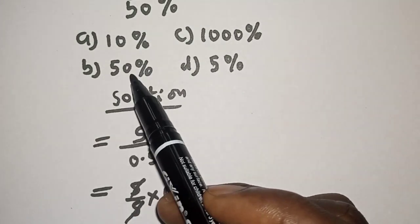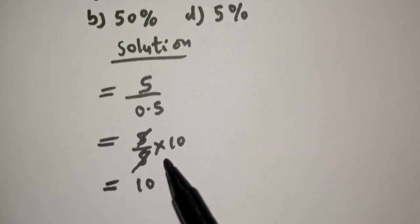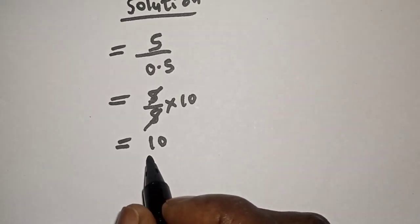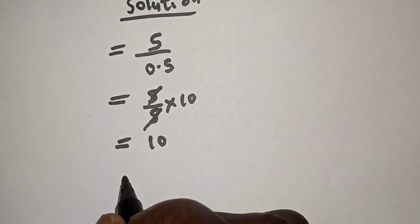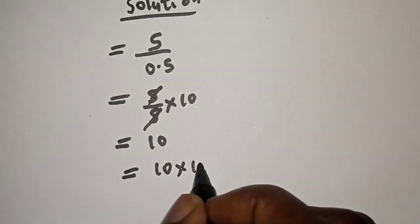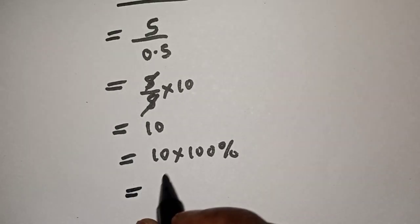We have 10%, 50%, 1,000%, and 5%. We have to convert this to percentage. In order to convert this to percentage, this will now be equal to 10. Let's multiply by 100, that's 100%. This is equal to 1,000%, and this is the final answer.